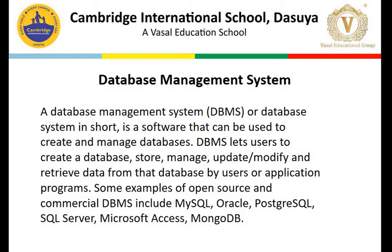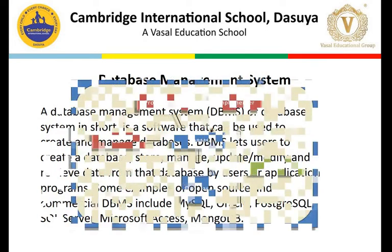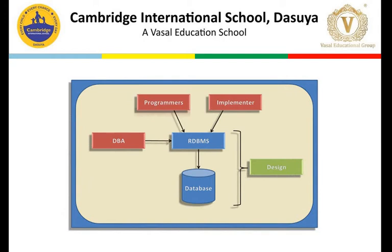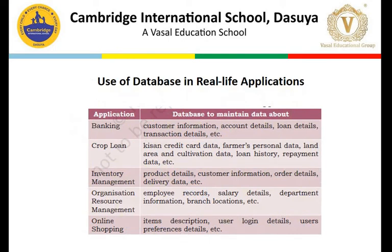We have different types of databases like open source and commercial DBMS, and a few examples are listed here. We also discussed the different applications of databases in real life, covering different areas of industries like airlines, railways, banking, insurance, and so on. Name any organization - they will be using a database.